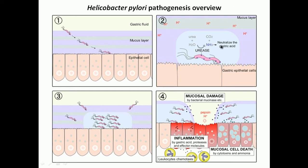As a result of neutralizing the acidity, the bacteria can live there for a longer period of time. After neutralizing the environment, they create a micro-environment — visible here in a different color — produced by Helicobacter pylori by secreting urease. Once this micro-environment is created, more and more pylori can come and start to colonize in this particular area.